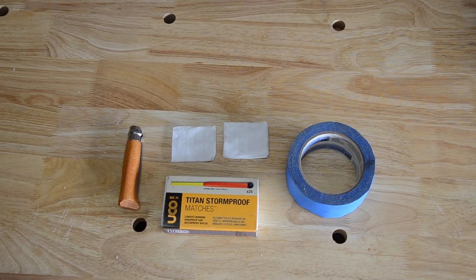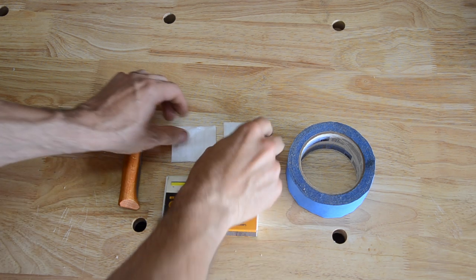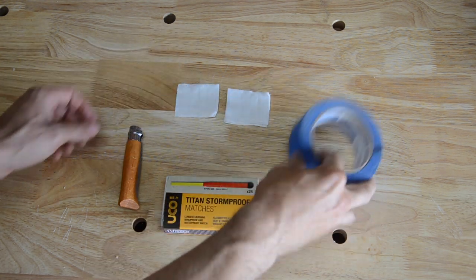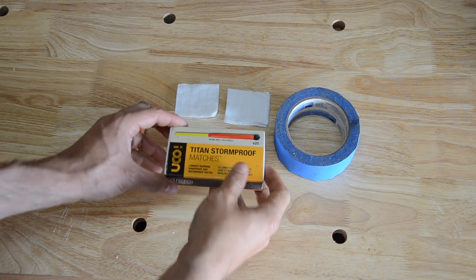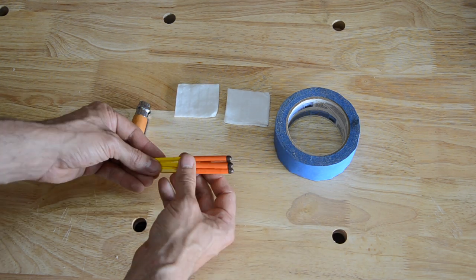While the wax is melting, I can start prepping my matches. So what I need is two cotton squares, some masking tape, a pocket knife, and of course my matches. I'll take out four of those matches.